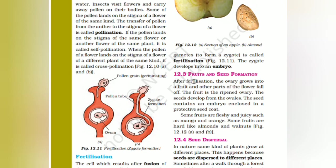Fruits and seed formation: after fertilization, the ovary grows into a fruit and the other parts of the flower fall off. This fruit is the ripened ovary. The seeds develop from the ovules. The seeds contain an embryo enclosed in a protective seed coat. Some fruits are fleshy and juicy such as mango and orange, while some fruits are hard like almonds and walnuts.